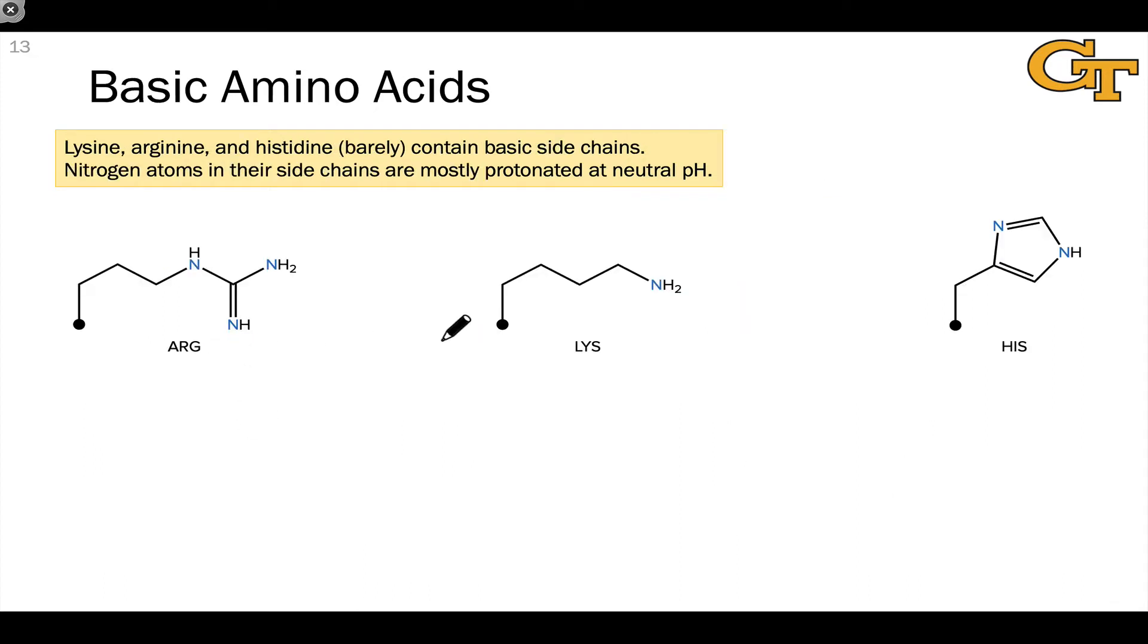The basic amino acids, arginine, lysine, and histidine, have side chains that are predominantly protonated at physiological pHs. But again, because of pKa modulation effects, we see both ionization states in enzyme active sites.